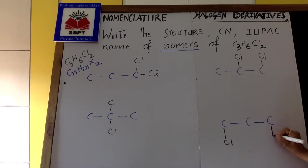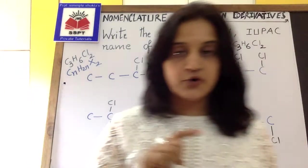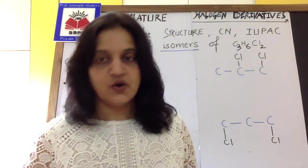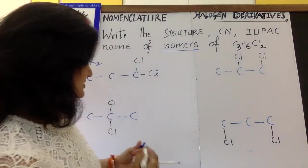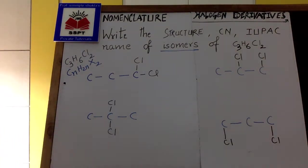I can take three carbons and now I am making one more structure where I am writing the halogen on the ends. These are the four possibilities for the general formula C3H6Cl2.